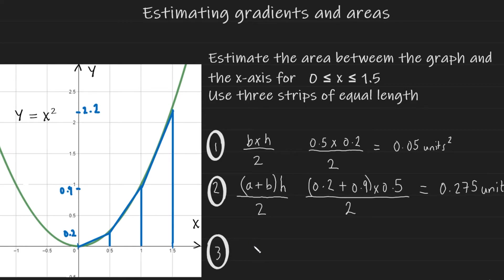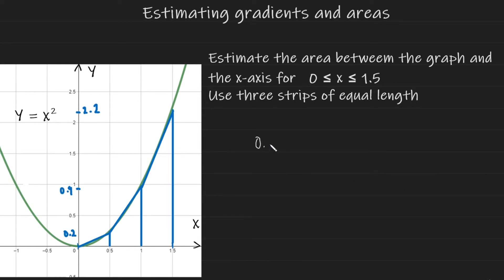Okay. Now for the third strip, it's going to be another trapezium. So we're going to use the same formula for the area of a trapezium. And A is going to be 0.9. B is going to be 2.2. It's going to have a height here, which is 0.5, 1.5 minus 1, that's 0.5. And we're going to divide this by two to get 0.775 units squared. Now that we have the areas of each individual strip, we can estimate the total area between the graph and the x-axis by adding these areas together. So that to the second strip, which has an estimated area of 0.275 and finally the third strip 0.775. And this gives us a total of 1.1 units squared. And that's how you would estimate the area between the graph and the x-axis for a given region using a certain number of strips.